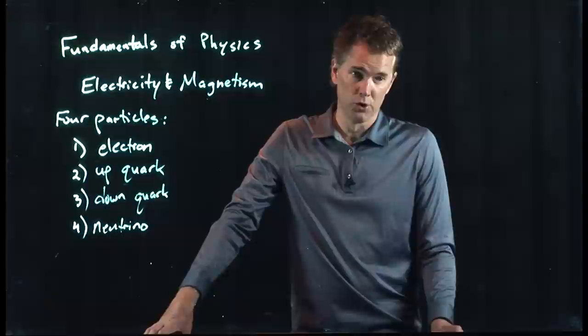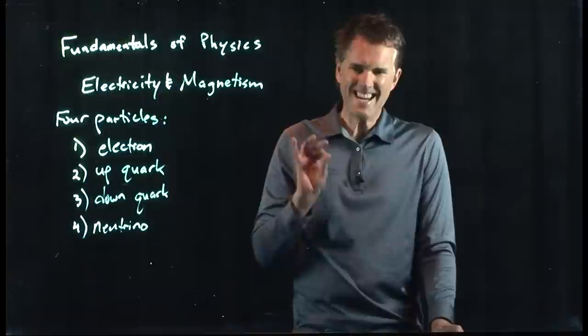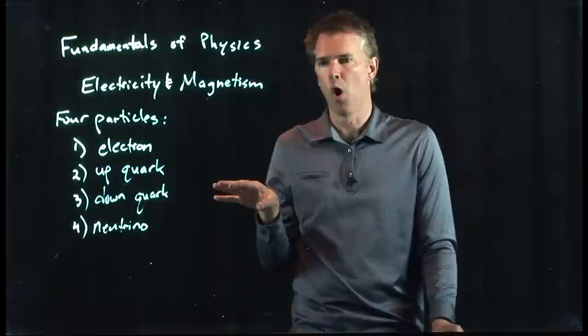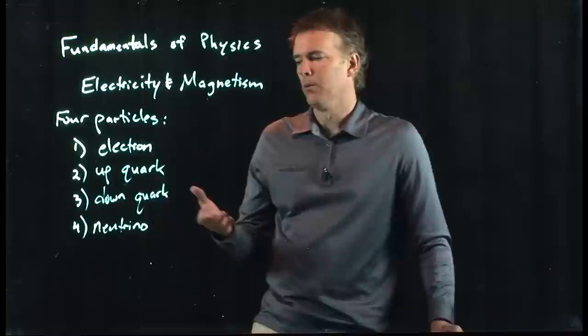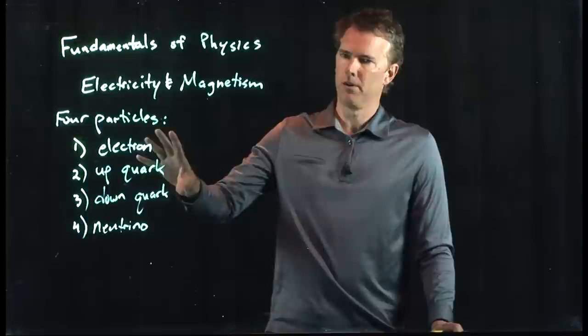The last particle on the list is the neutrino — the little neutron. The neutrino has zero charge, nearly zero mass, zips around the universe at the speed of light, goes through almost everything without leaving a trace, and is very hard to detect. It was predicted theoretically and then verified experimentally. Those are the four particles you need to worry about.